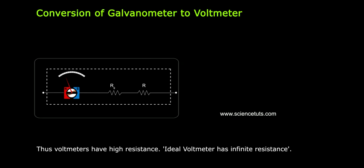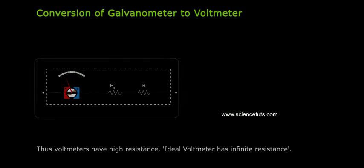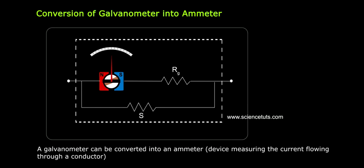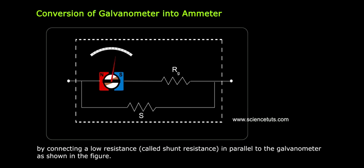Conversion of galvanometer into ammeter. A galvanometer can be converted into an ammeter, a device measuring the current flowing through a conductor, by connecting a low resistance called shunt resistance in parallel to the galvanometer as shown in the figure.